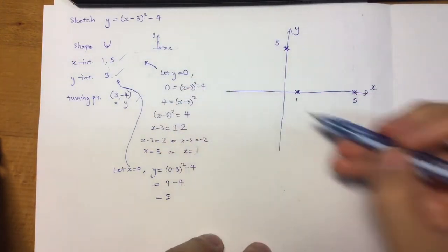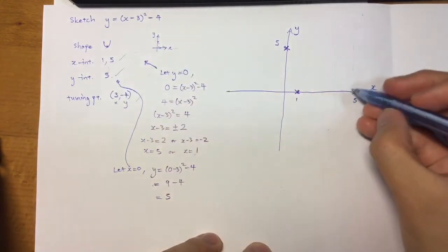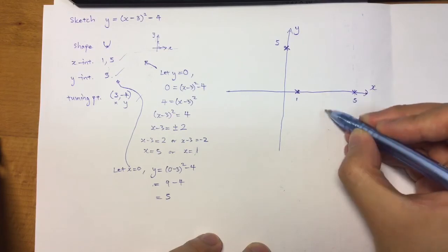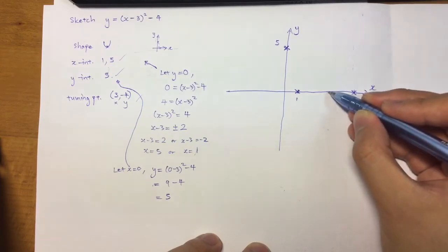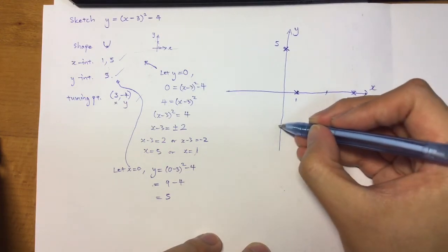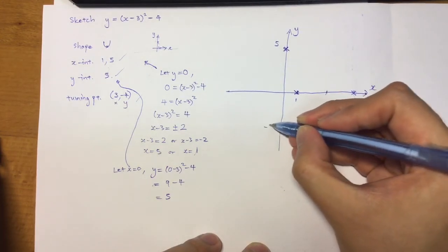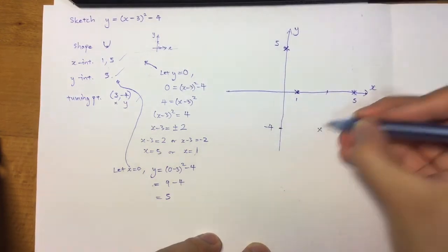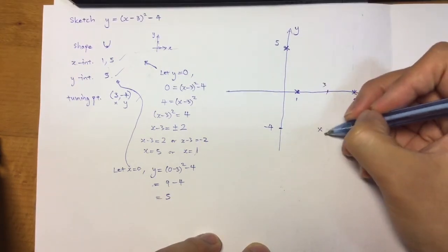Last but not least, x value 3, y value negative 4. So 3 is right smack in between the 1 and 5, maybe around here. And maybe down here where it's negative 4. So I have 3, negative 4.